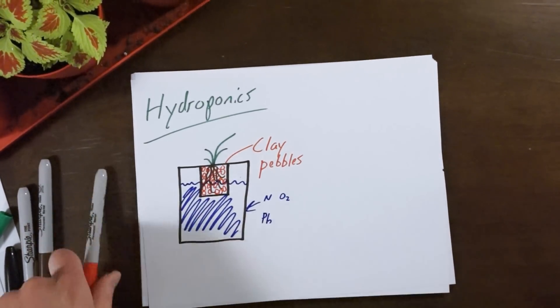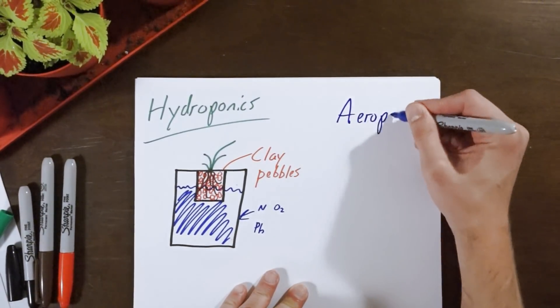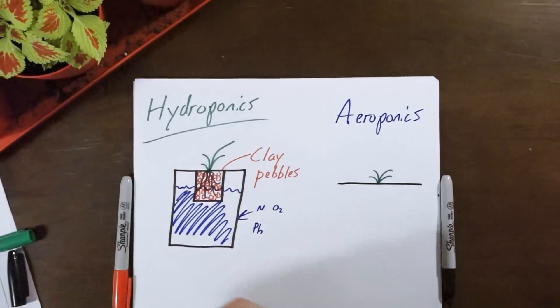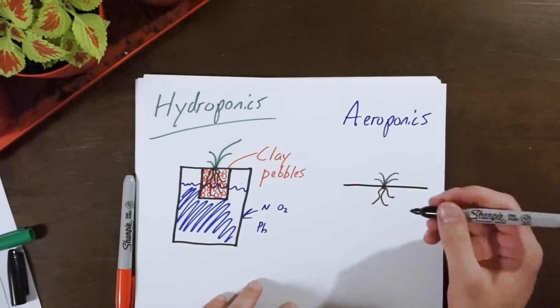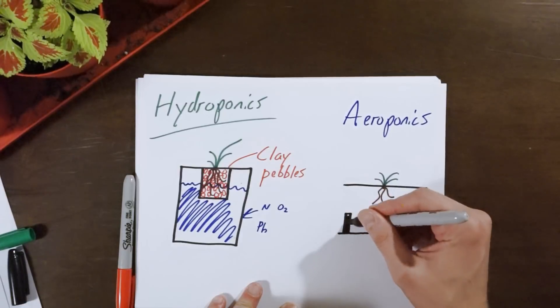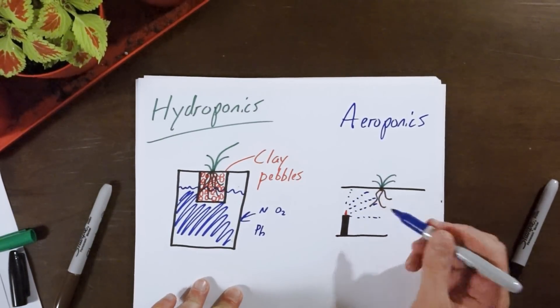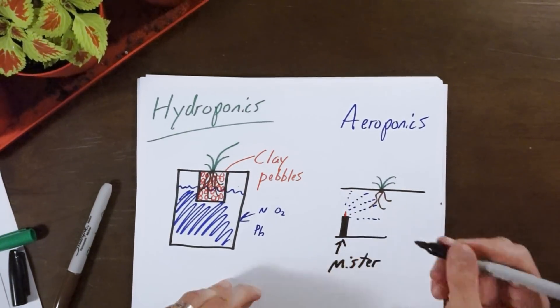There is even an offshoot of hydroponics called aeroponics where the plants and their roots are suspended in the air. With this process, plenty of oxygen is provided for the plants and they receive nutrients from a nutrient solution delivered from a mister, like the mechanical mister, not Mister Mister.